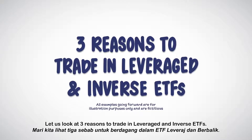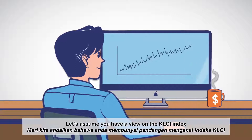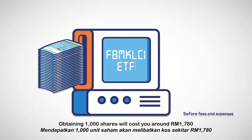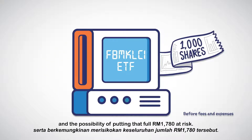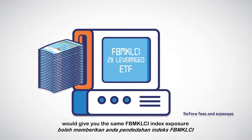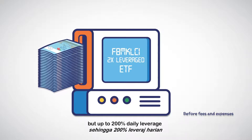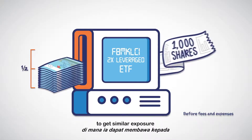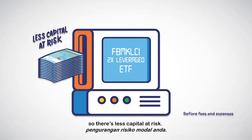Let us look at three reasons to trade in leveraged and inverse ETFs. Let's assume you have a view on the KLCI index and decide to use the FBM KLCI ETF for your market exposure. Obtaining 1,000 shares will cost you around RM1,780, with the possibility of putting that full RM1,780 at risk. On the other hand, an FBM KLCI 2 times leveraged ETF would give you the same FBM KLCI index exposure but up to 200% daily leverage, allowing you to put up just half the amount of money or less to get similar exposure — so there's less capital at risk.